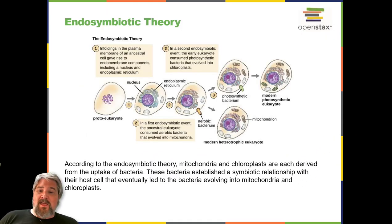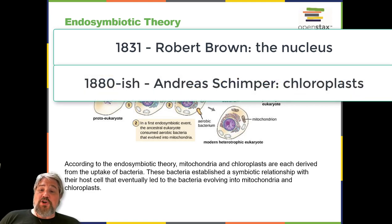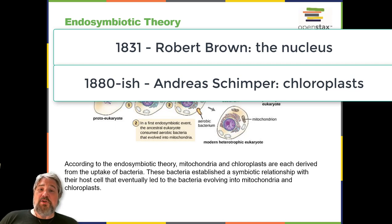Endosymbiotic Theory. As scientists were making progress towards understanding the role of cells in plant and animal tissues, others were examining the structures within the cells themselves. In 1831, Scottish botanist Robert Brown (1773–1858) was the first to describe observations of nuclei, which he observed in plant cells. Then, in the early 1880s, German botanist Andreas Schimper (1856–1901) was the first to describe the chloroplasts of plant cells, identifying their role in starch formation during photosynthesis and noting that they divided independent of the nucleus.